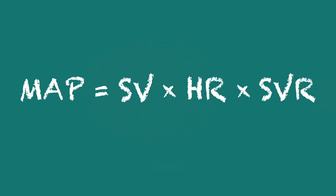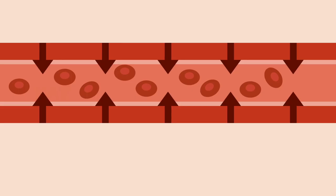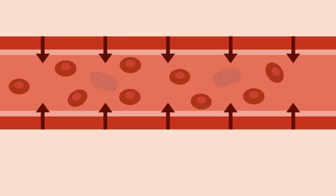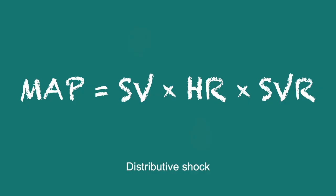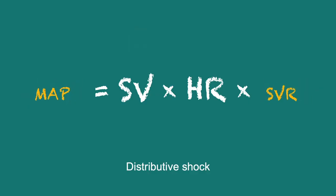Here's that equation again. Since this is shock, MAP will be low. Let's start with the primary insult. For distributive shock, this is a drop in SVR, which in sepsis is due to the blood vessels dilating and becoming leaky due to factors released by the bacteria. So in distributive shock, the SVR and MAP both drop.